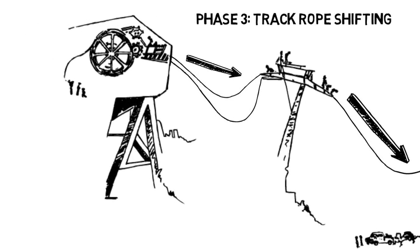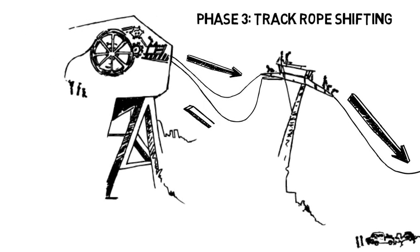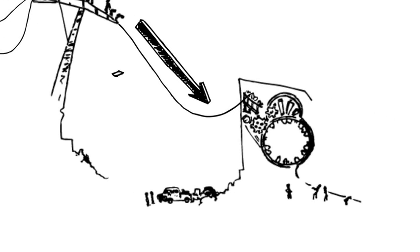In the end, each of the four track ropes will be pulled 150 feet downhill. Once the rope is shifted the required distance, the excess rope will be cut and recycled.